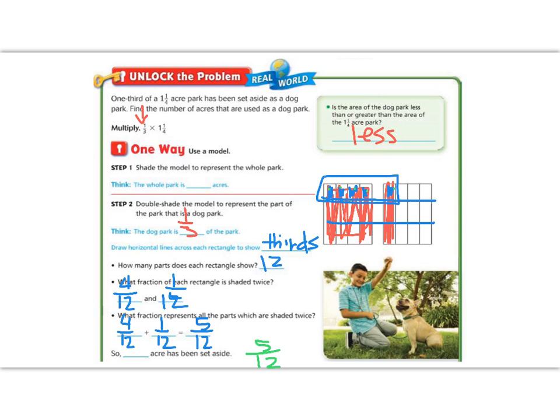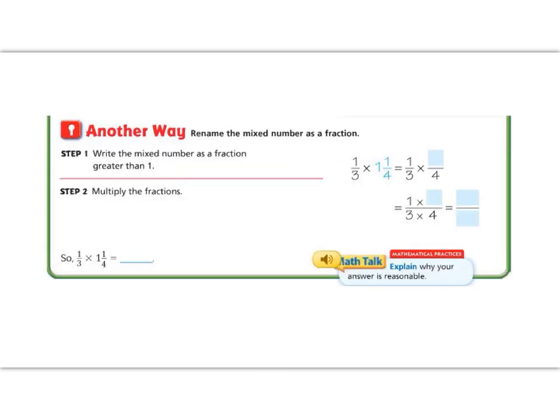The acre of the park set aside for the dog park is going to be 5/12. Notice that our number is less than what we originally had. Let's look at this just in the numbers in another way. It is often very helpful to use a model when we are multiplying, but we want to be able to do this just with math as well. So when we multiply a fraction times a mixed number, we want to change our mixed number into an improper fraction. So remember we do that by multiplying times the bottom and adding to the top. So 1 × 4 is 4 + 1 is 5. So we're going to multiply 1/3 × 5/4. Now that we have a nice easy fraction, no mixed number, we're going to multiply straight across the top and straight across the bottom. 1 × 5 is 5 and 3 × 4 is 12. So that gives us the answer 5/12.